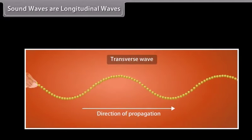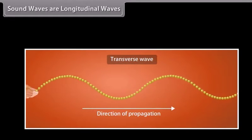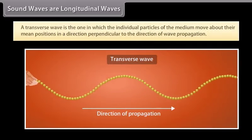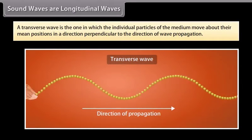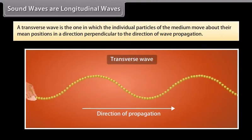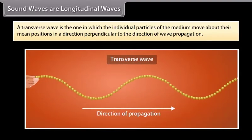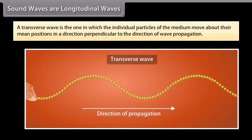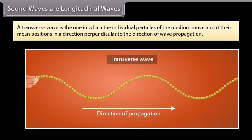There is also another type of wave called a transverse wave. A transverse wave is the one in which the individual particles of the medium move about their mean positions in a direction perpendicular to the direction of wave propagation.